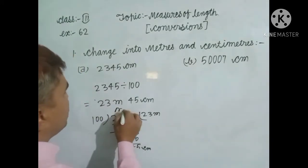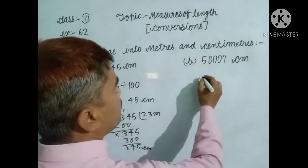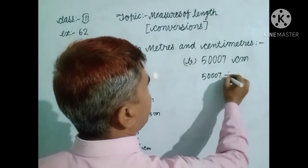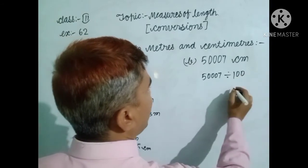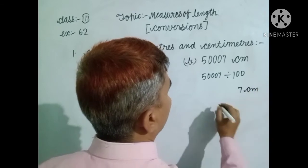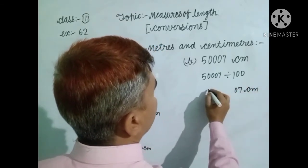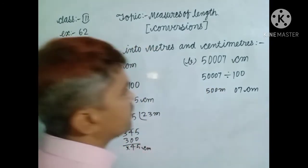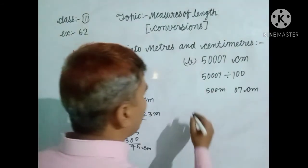Now, dear students, for 50007 centimeters divided by 100: the last two digits from the right are the remainder, so 07 centimeters is the remainder, and 500 is the quotient, giving us 500 meters. The answer is 500 meters and 7 centimeters.